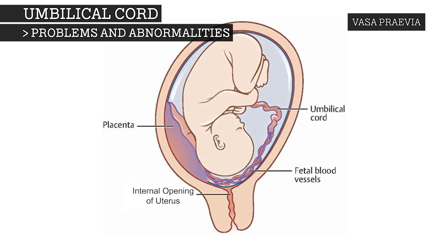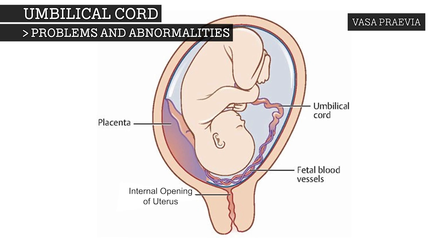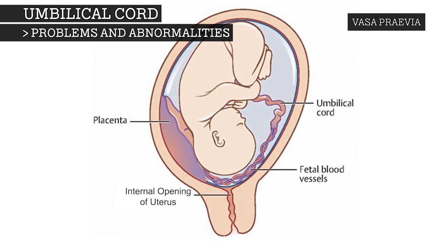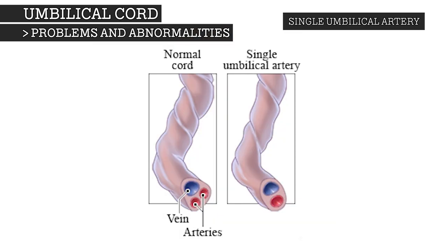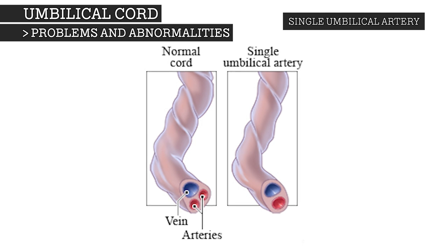Vasa previa, when fetal blood vessels are not encased within the umbilical cord and cross over or run near the internal opening of the uterus, putting them at risk of rupture. And single umbilical artery, which is when there is only one umbilical artery instead of two. This is the most common abnormality and in most cases the baby is normal and healthy. However, in some cases, it can be a sign that there is another, more concerning abnormality present.